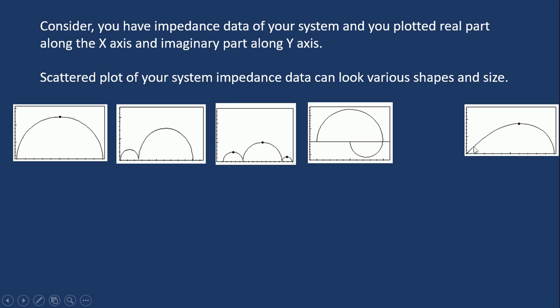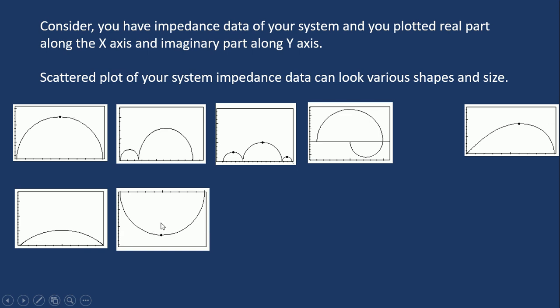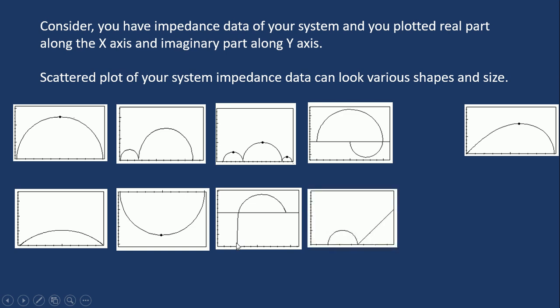That means in higher frequency region there is a straight line and in lower frequency it looks like a semicircle. Or it can look like an inverted semicircle. Or it can look like one semicircle and in higher frequency there is a straight line going downwards. Or it can look like a semicircle and then in the low frequency range there is a straight line behavior.